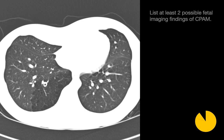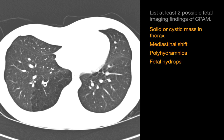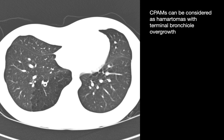List at least two possible fetal imaging findings of CPAM. Possible imaging findings include a solid or cystic mass in the chest, mediastinal shift, polyhydramnios, or fetal hydrops. One way to think about CPAMs conceptually is that they're basically hamartomas — hamartomas of terminal bronchial overgrowth.